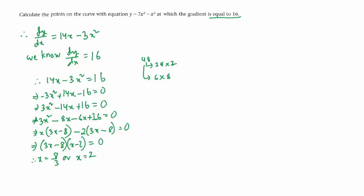We got 2 values of x. Now a point is made up of both x coordinate and y coordinate. It's an ordered pair. We have to find the values of y also from here. When x = 8/3, what is the value of y?